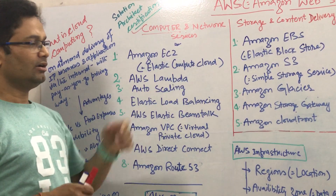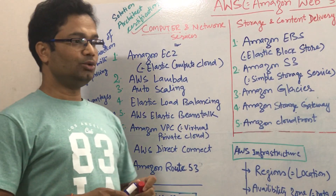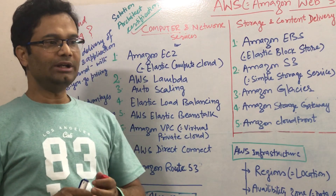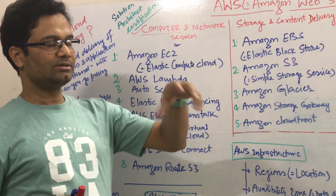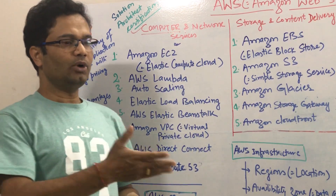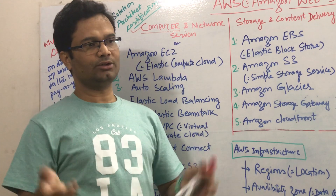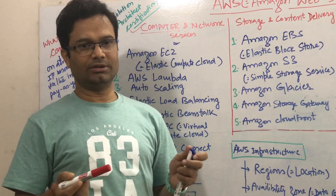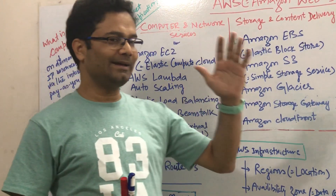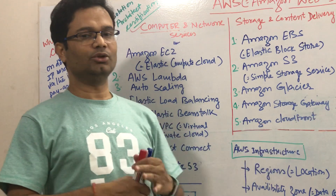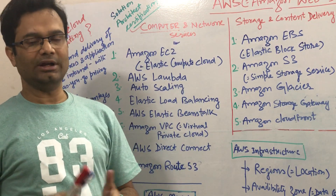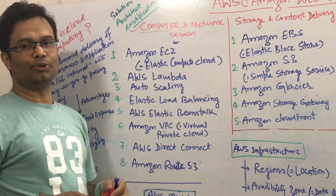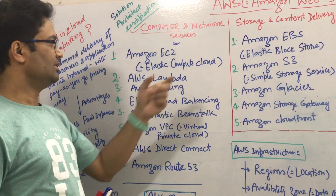Second is AWS Lambda. If you see the use case of many projects, you need computing power only at certain points in time. Suppose you have to send emails to 1,000 credit card holders and that is only applicable at the end of the month. For that, there is no need to have a dedicated machine. You run that back-end task without any dedicated machine — that is called serverless computing, and that comes under AWS Lambda.